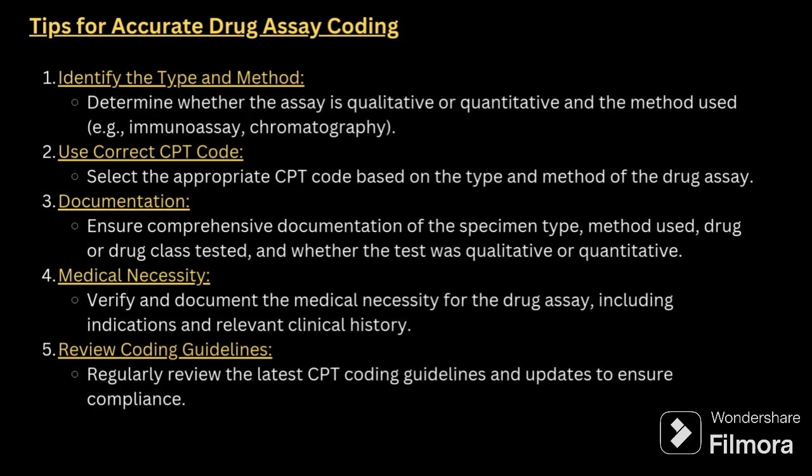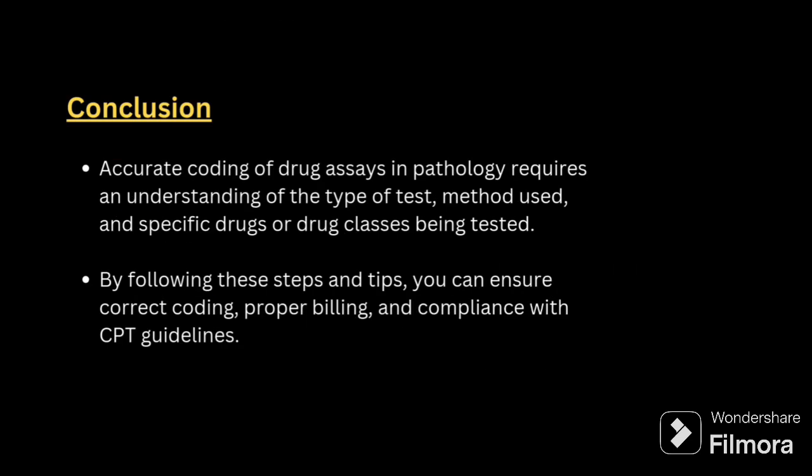The tips for coding: first, identify the type and method. Second, assign the correct CPT code. Third, check for documentation. Fourth, verify medical necessity. Fifth, review coding guidelines. All these things are necessary to check twice before giving the proper code. Accurate coding of drug assay in pathology requires an understanding of the type of test, method used, and specific drugs or drug classes.